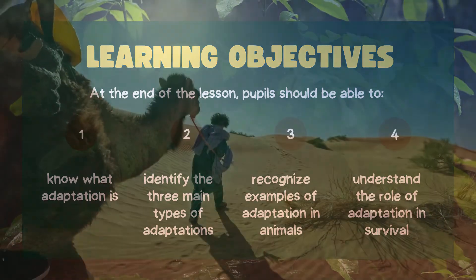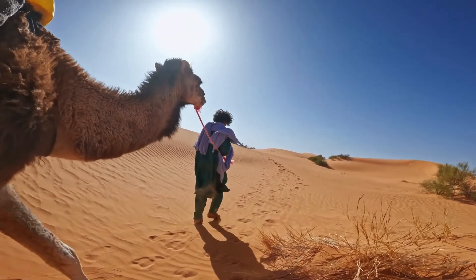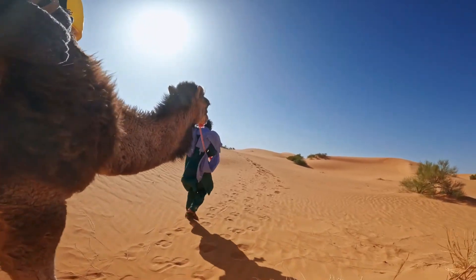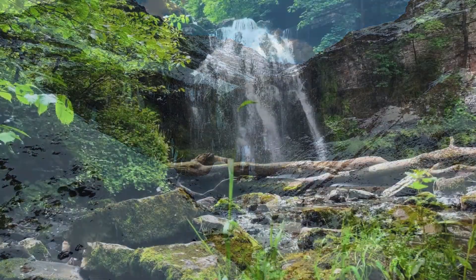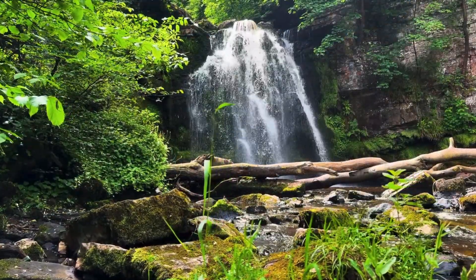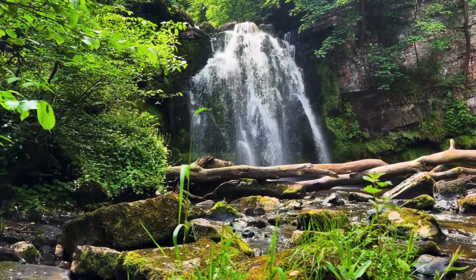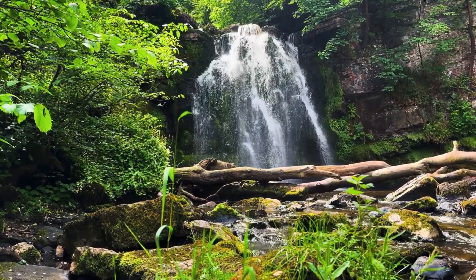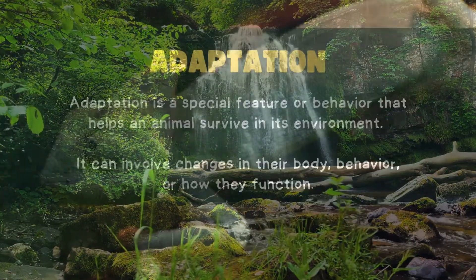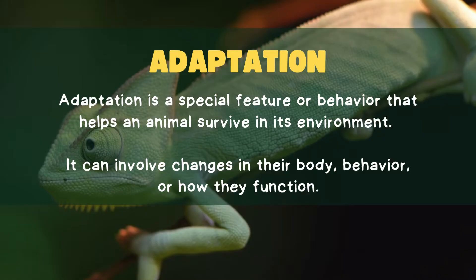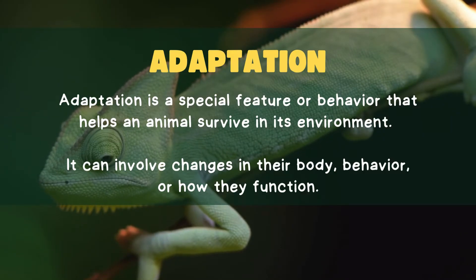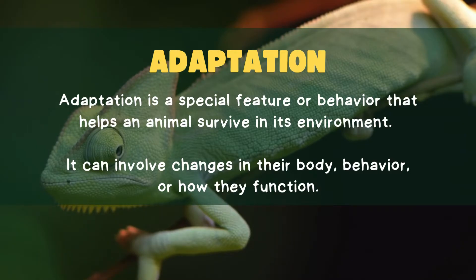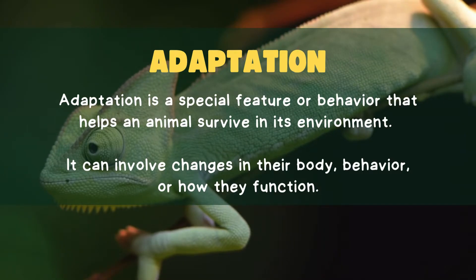Have you ever wondered how animals are able to live in so many different places on Earth? Whether it's a hot desert, a cold mountain, or a lush forest, living things have special ways to adapt to their environments. These special features are called adaptations. Adaptation is a special feature or behavior that helps an animal survive in its environment. It can involve changes in their body, behavior, or how they function.